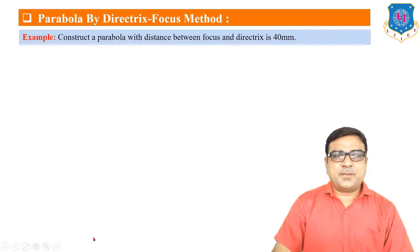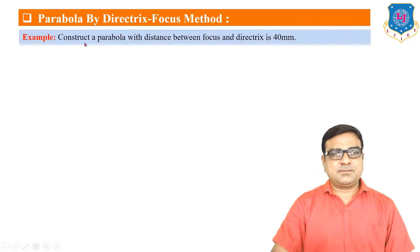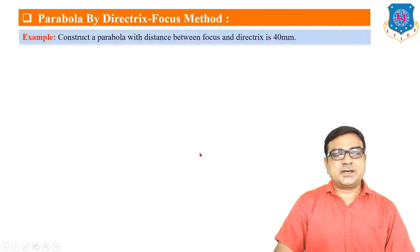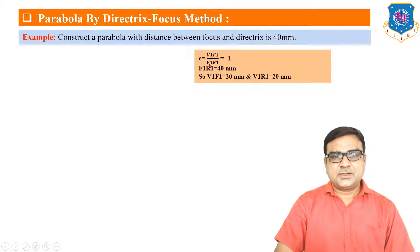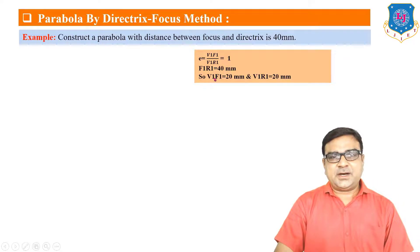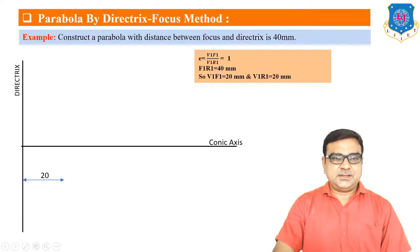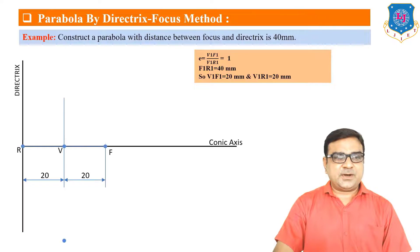Now the same method applies for the parabola, but here eccentricity equals one. The problem: construct a parabola with the distance between focus and directrix equal to 40 mm. Since the ratio is 1, the vertex V is the midpoint of the focus and directrix, so VF1 = 20 mm and VR = 20 mm.